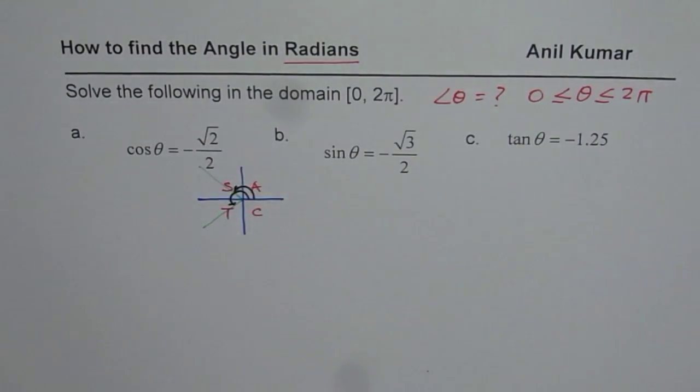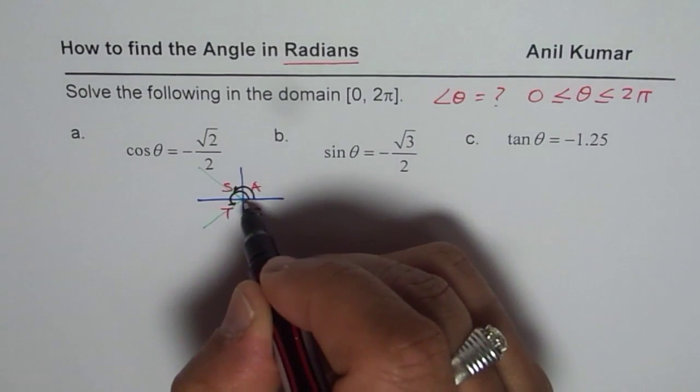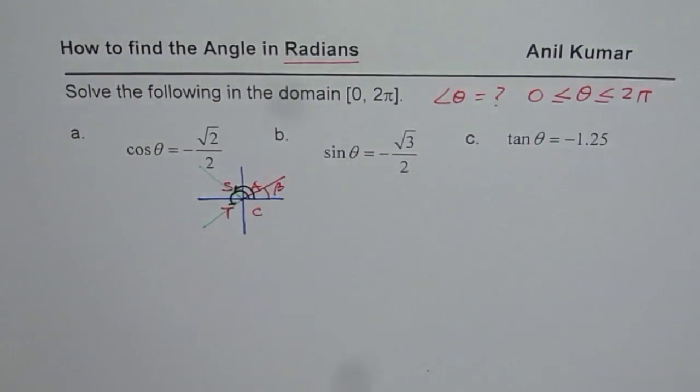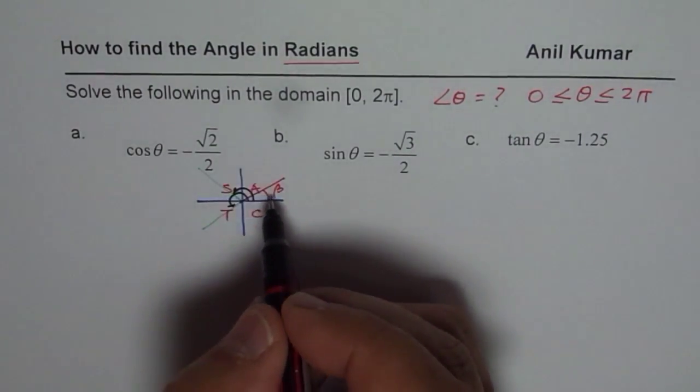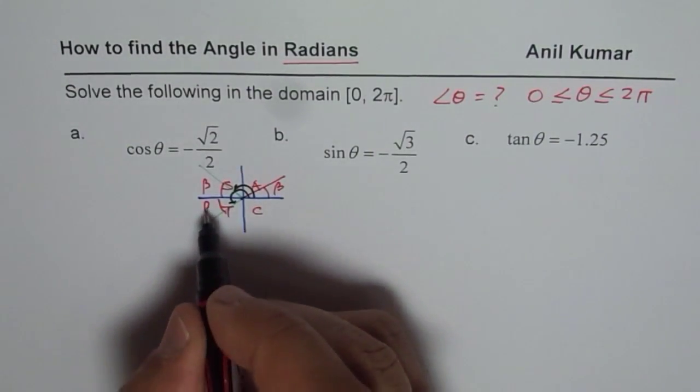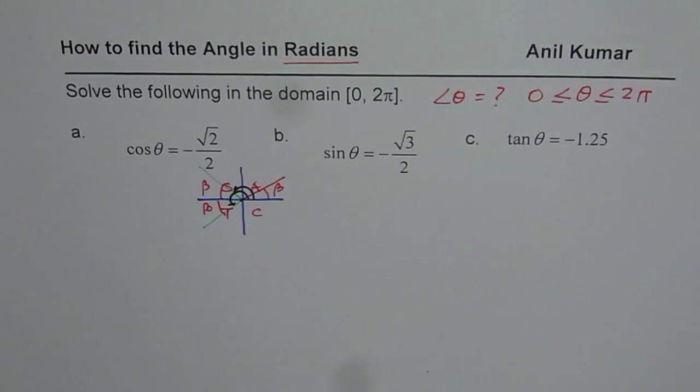Now how do we get these answers? The method here is you get them indirectly. First you get the acute angle, so we will call that acute angle as β. First step is find the acute angle, and then we know this angle is β. Using β, we will get the principal angle.